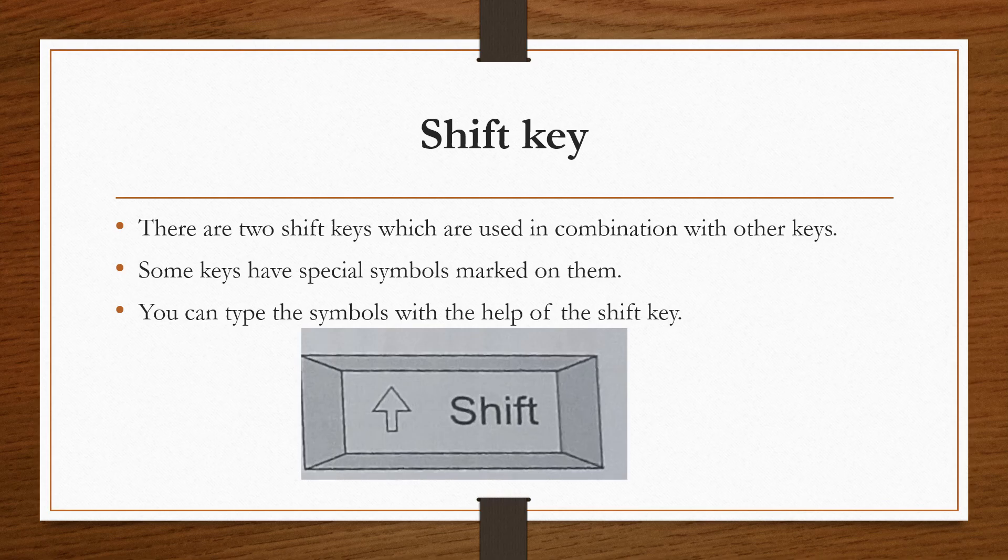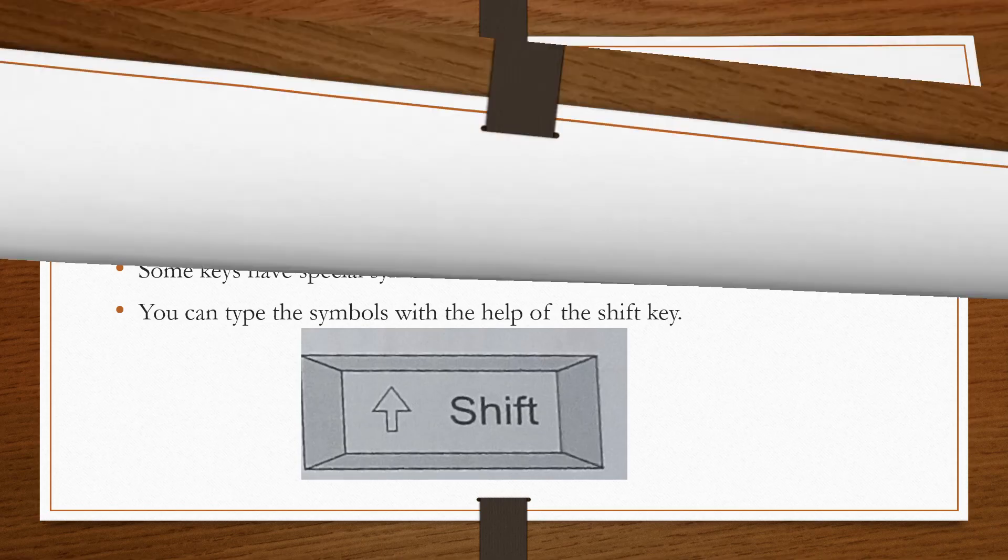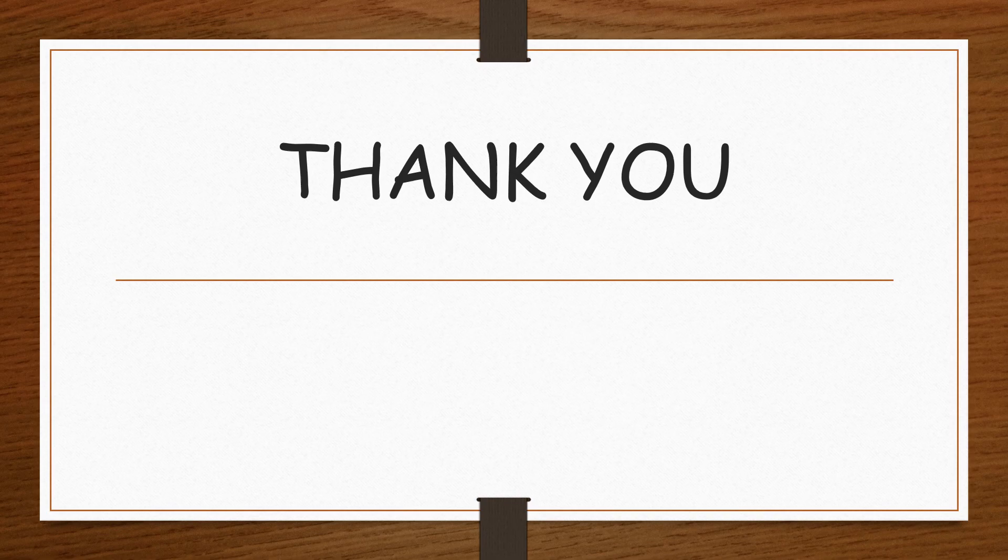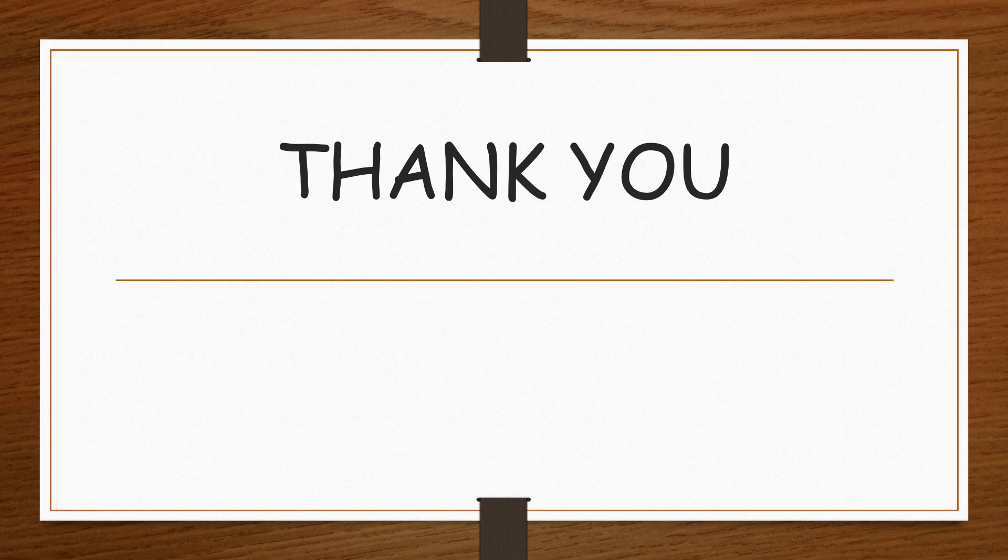Next and the last is shift key. So again, as there are two enter keys in the keyboard, there are two shift keys as well. And these keys are used in combination with the other keys. And some keys have special symbols marked on them. So in order to type those symbols, we take the help of the shift key. Now you have understood the use and the functions of the keys in the keyboard. That's all for today. Thank you so much.